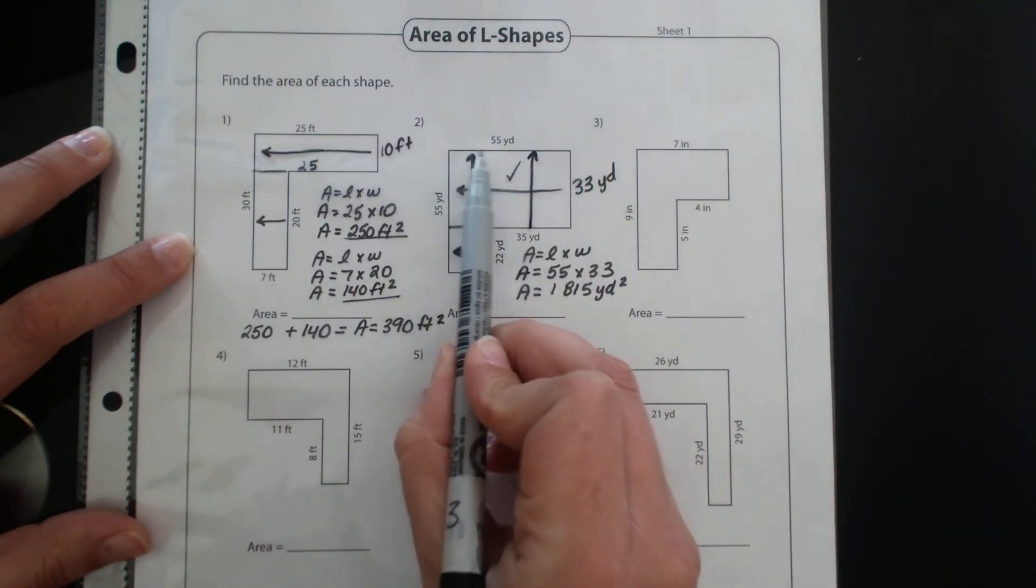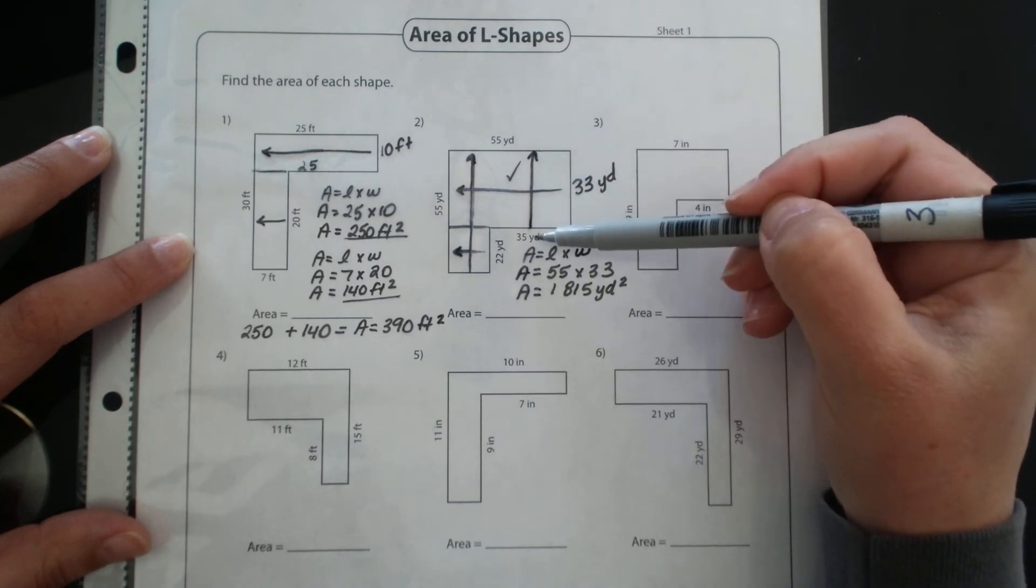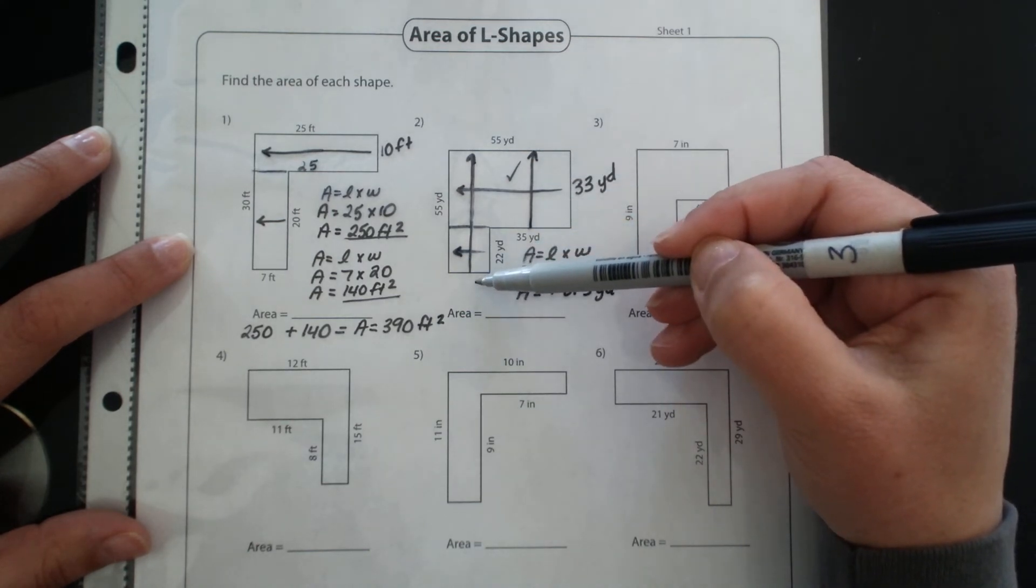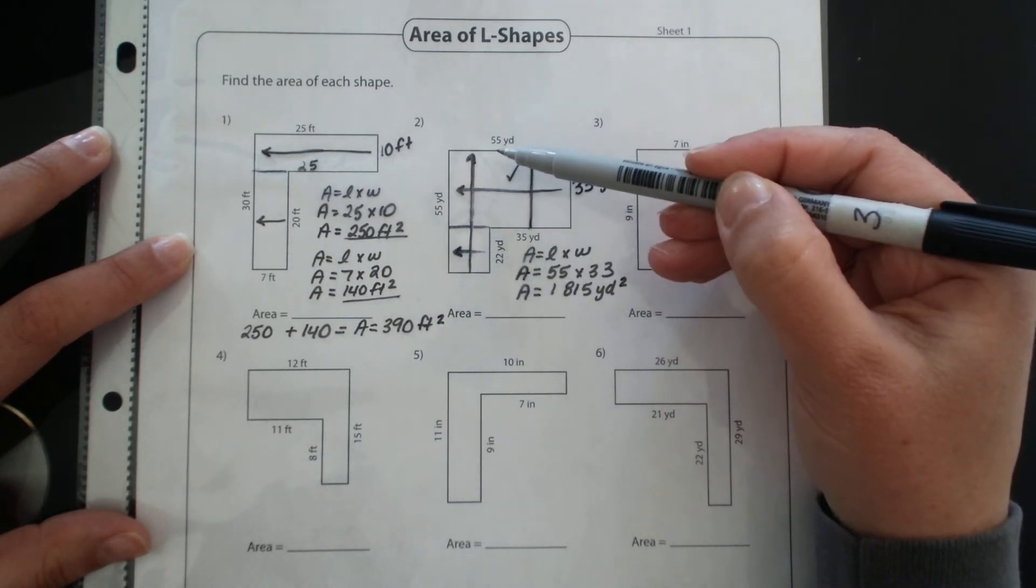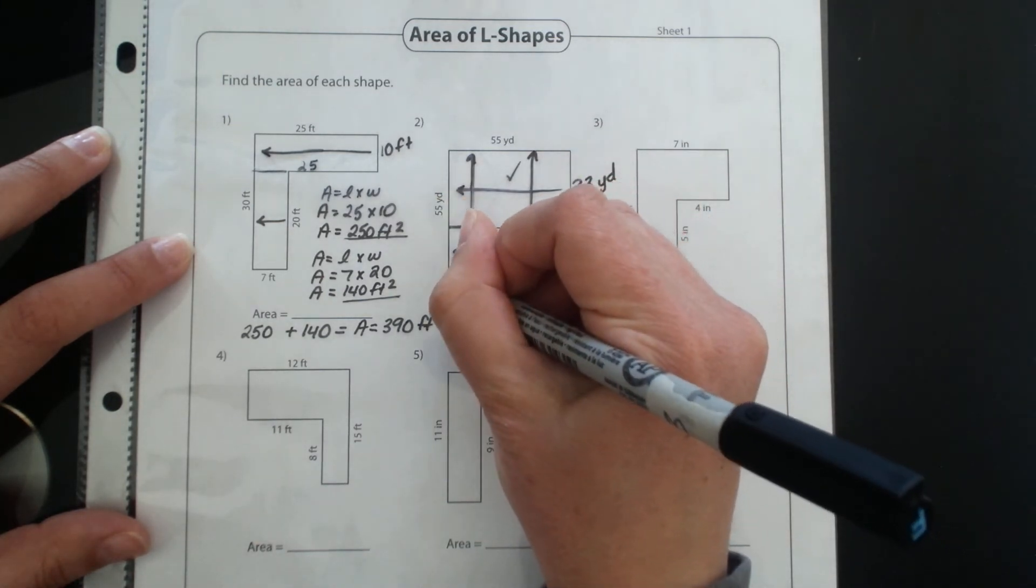So again, I've got 55 and then I've got 35 plus something else has to equal 55, and I'll determine that this side then has to be 20.